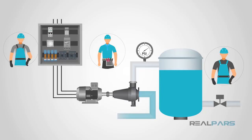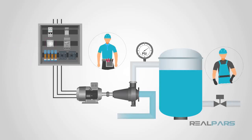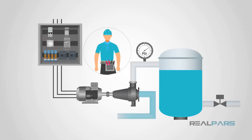As manufacturing grew and sites became more remote in nature, relays and timers were used to assist in the supervision and control of processes. With these devices employed, fewer plant personnel were required to be on-site in order to oversee and control operations.